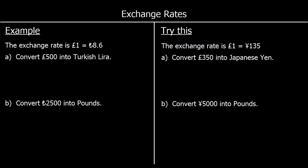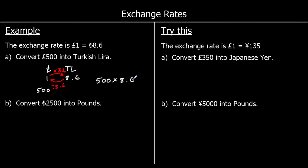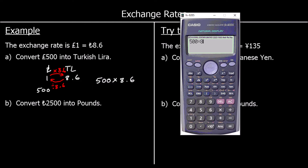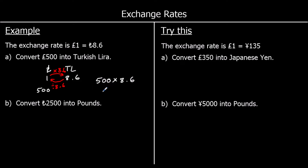Another exchange rate question — this time we have pounds and lira. The exchange rate is one pound is equal to 8.6 Turkish lira. We're going to convert 500 pounds into Turkish lira. To go from 1 to 8.6, we times by 8.6; to go from lira back to pounds, we divide by 8.6. So it's 500 times 8.6, and that is 4,300 Turkish lira.